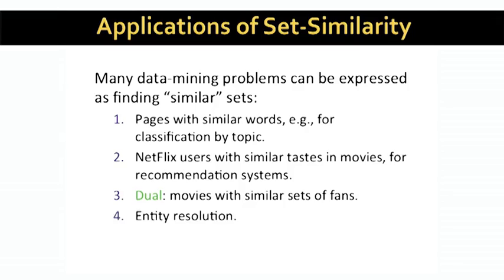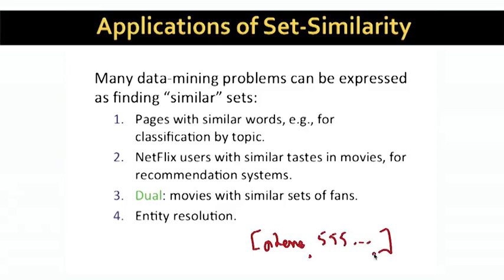People create records of data about themselves at many different sites — Google, Amazon, Facebook, and so on. We may want to figure out when two records refer to the same individual, and this need gives rise to the problem called entity resolution — determining the set of records that refer to the same individual. To see the problem, many sites will ask for a phone number, but you might give your landline at one site, your cell phone number at another, not give a number at all at a third site, and mistype your number at a fourth. However, we can often wade through the errors and ambiguities by thinking of a record as a set of attribute-value pairs. Records with similar, even if not identical, sets of attribute-value pairs may well represent the same individual, and these records can be merged to combine their information.